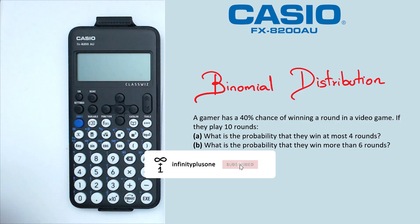Okay, to start off with this question, we've got a 40% chance of winning so that means our P is going to be 0.4. Then we're also looking at playing 10 rounds so that means n is equal to 10.